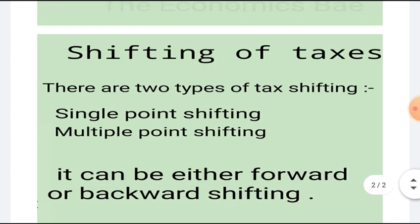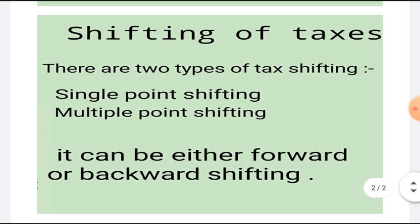Now we'll move ahead to shifting of taxes. So what does tax shifting mean? It means when some or all of the tax burden is transferred to another entity. For example, tax shifting from producers to the consumer. The person who is legally responsible for paying the tax, for example the producer, shifts the real burden on to the consumer through price increases.